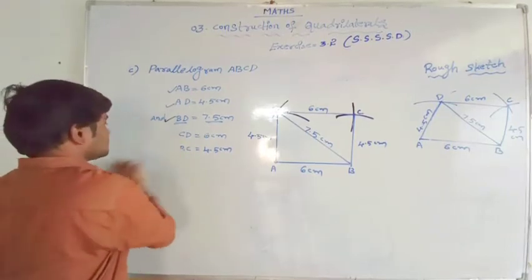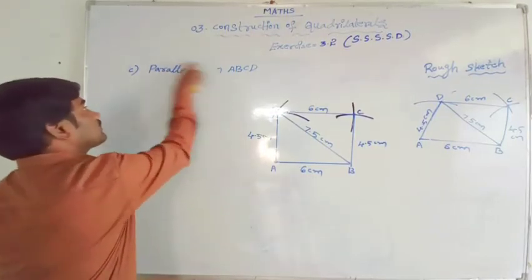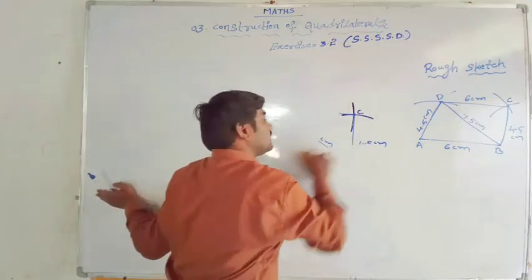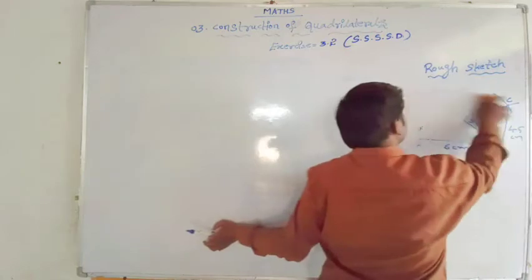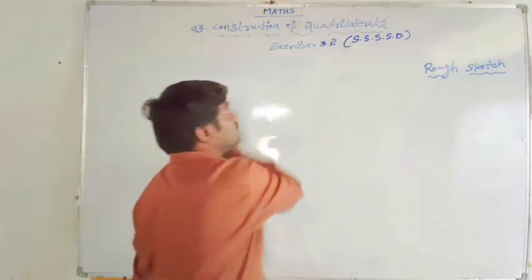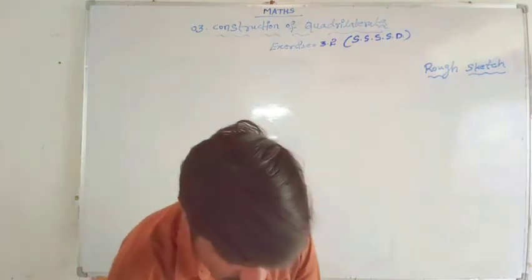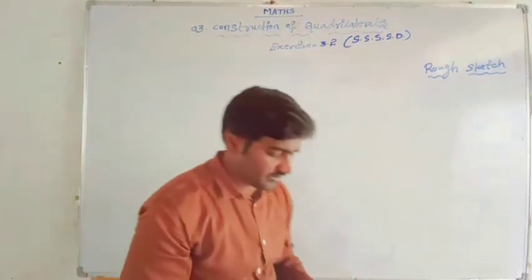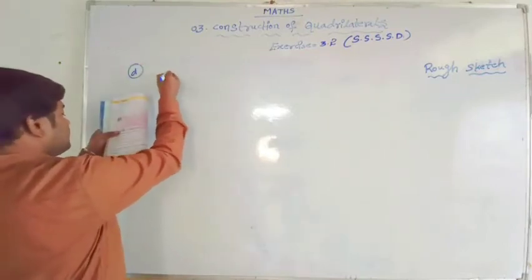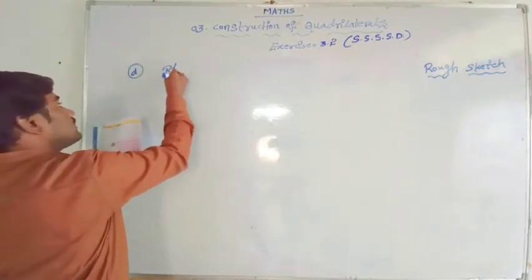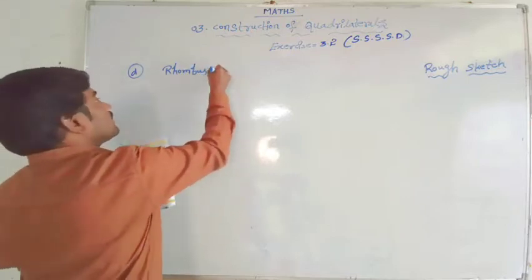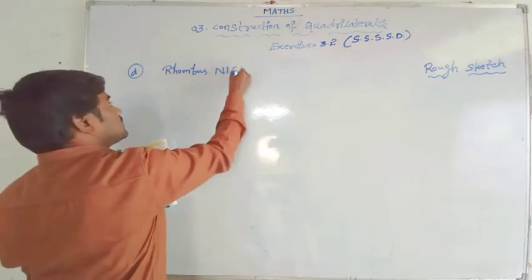Next, there is one more question from this exercise. Constructions are very easy if you try to do it step by step - you will get the answer without any mistakes. Question D1: we have to construct a rhombus NICE, where NI equal to 4 cm and IE equal to 5.6 cm.